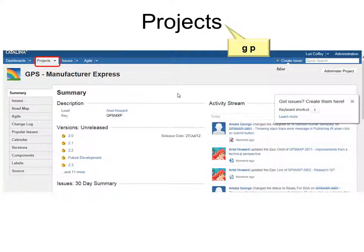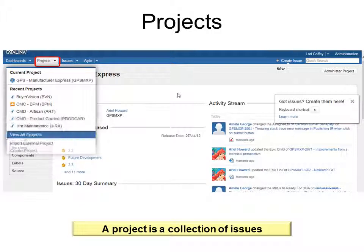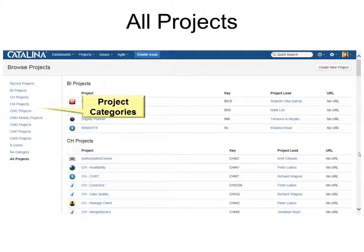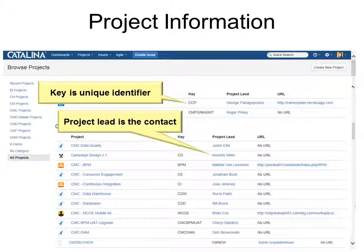Next is Projects on the navigation bar, and you can go there using the keyboard shortcut G then P for Projects. A project is a collection of issues. If you click the drop-down, you'll have the option to view all projects, and they will be listed by categories. In the project information, you'll see the key — the unique identifier for the project — the project lead who is the contact, and if there's a URL, it's a link to the wiki so you can look at more information.